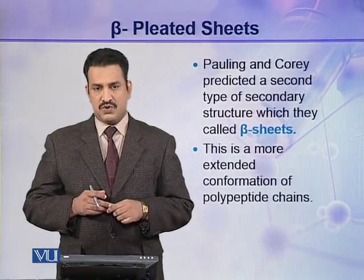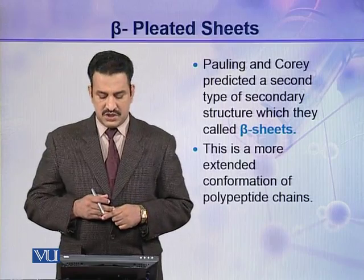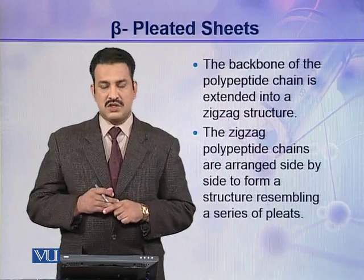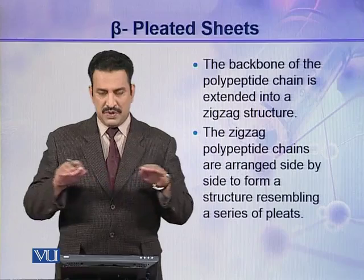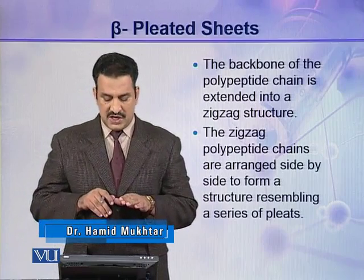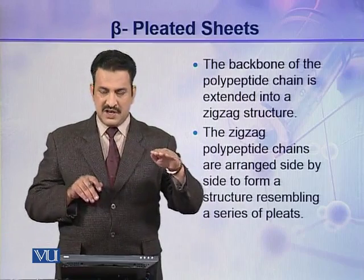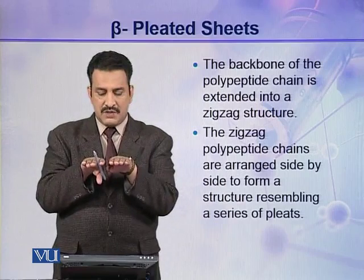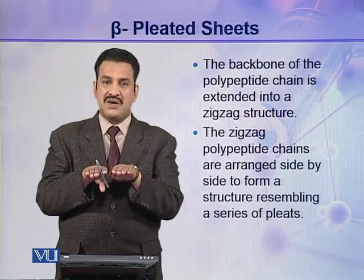Pauling and Coray predicted a second type of secondary structure which they called beta sheets, or generally beta conformations. This is a more extended conformation of polypeptide chain as compared to alpha helix. In beta sheets, the backbone of the polypeptide chain is extended into a zigzag structure. The zigzag polypeptide chains are then arranged side by side, and when arranged side by side they resemble a pleated sheet — that's why these structures are called beta pleated sheets.